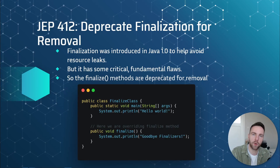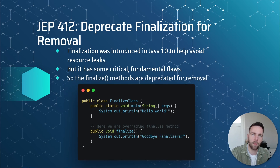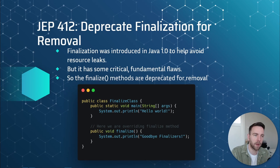The first JEP is 421: Deprecate Finalization for Removal. Finalization was originally introduced in Java 1.0 to help avoid resource leaks. This happens by the garbage collector calling the public void finalize method in order to perform some cleanup, but this method has some critical fundamental flaws, so the finalize methods have been deprecated for removal.